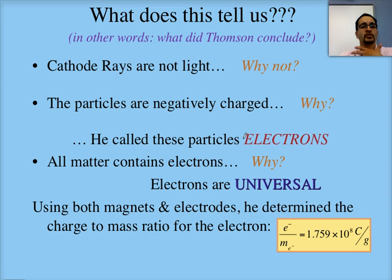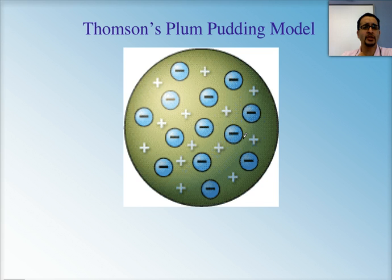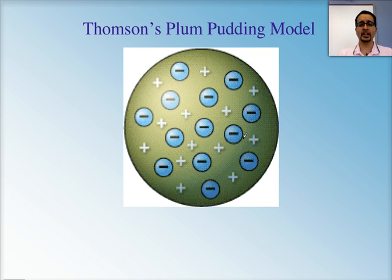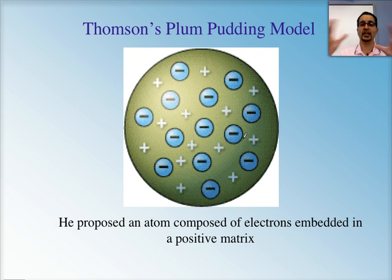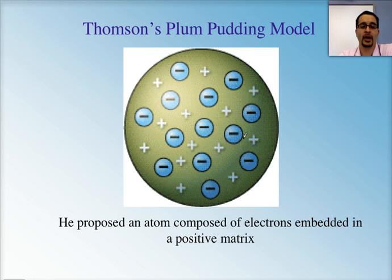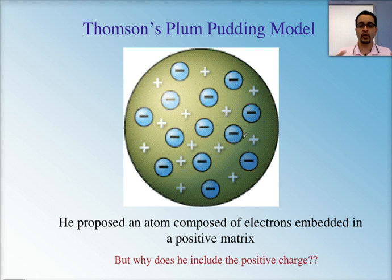We'll talk briefly about that. From his discovery of the electron, Thomson was able to create a new atomic model. We call it the plum pudding model because it's a British idea — but if it had been developed in America, it would probably be called the blueberry muffin model. He said that electrons are embedded in a positive matrix, much like blueberries in muffin dough, or plums in pudding. Now, a small question to consider: why does he include a positive charge? Why does he make the matrix — the dough in which the electrons are embedded — positive? I want to see your answers next time.